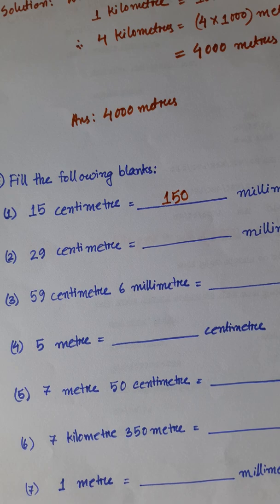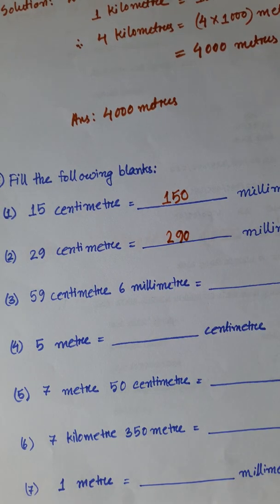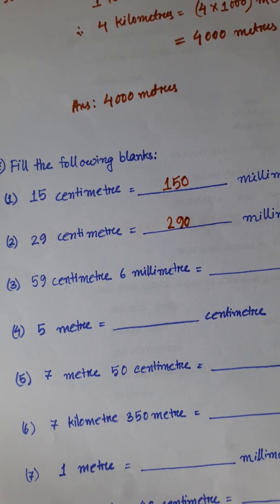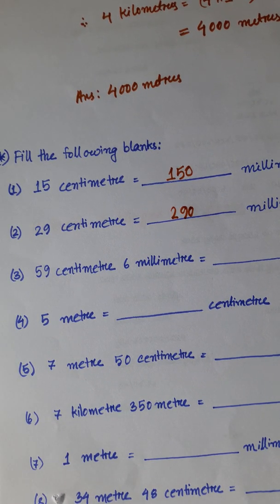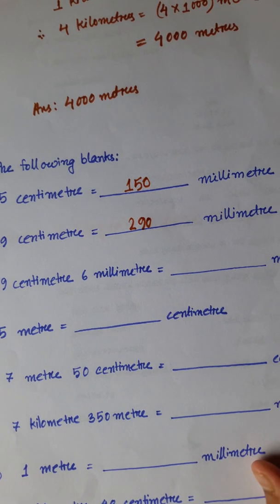Similarly, 29 into 10 is 290 millimeters, as 1 centimeter is equal to 10 millimeters. Number 3: 59 centimeters 6 millimeters is equal to dash millimeters. 59 centimeters is 59 into 10, that is 590 millimeters. Adding 6: 590 plus 6 is equal to 596 millimeters.